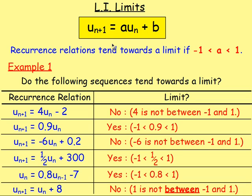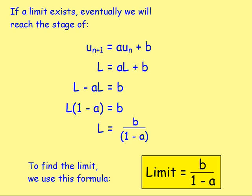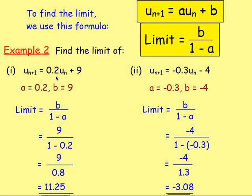Working out limits: for un plus 1 equals a·un plus b, if A is between negative 1 and 1, the sequence tends towards a limit. Eventually the limit is what you put back in for un and you still get the limit out. Rearranging gives the formula for the limit: L equals B over 1 minus A. We worked out limits for several recurrence relations — confirming a limit exists when A is between negative 1 and 1, then calculating it using B over 1 minus A.